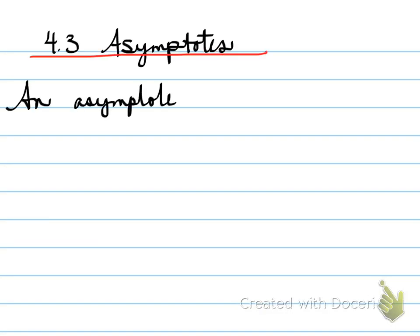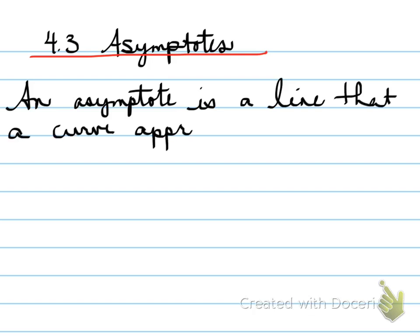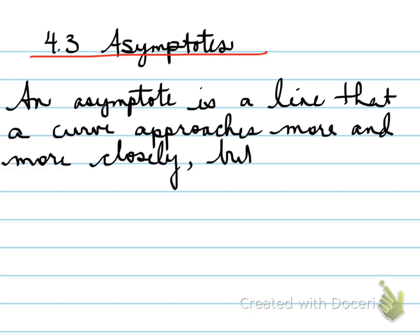4.3 asymptotes. In this section, we're going to look at asymptotes. An asymptote is a line that a curve approaches more and more closely, but never touches.